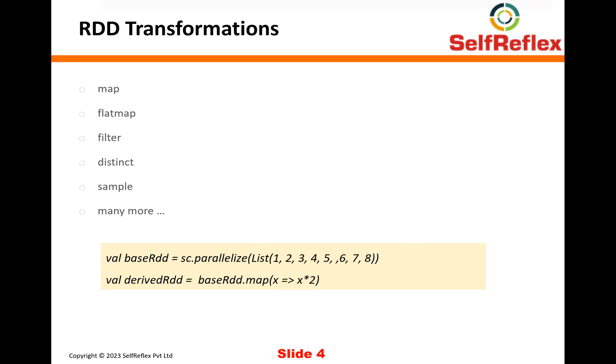And as we saw earlier, because there are multiple partitions available on different machines within your cluster, whatever business logic you provide using the map function, it will run in parallel on all those partitions. So as an example, if you apply this function on your RDD, base RDD, where you are basically multiplying each and every row by two, it will actually run in parallel on all those four partitions that we saw earlier.